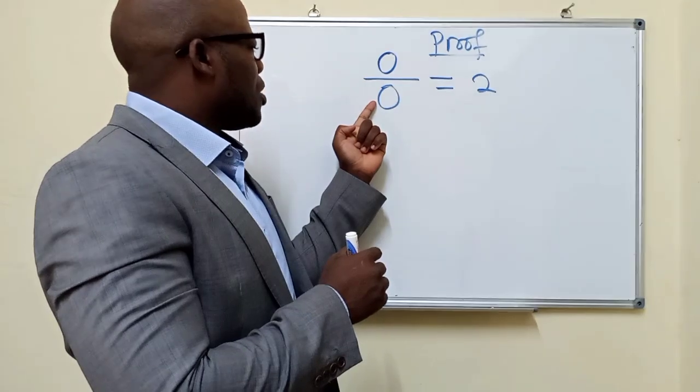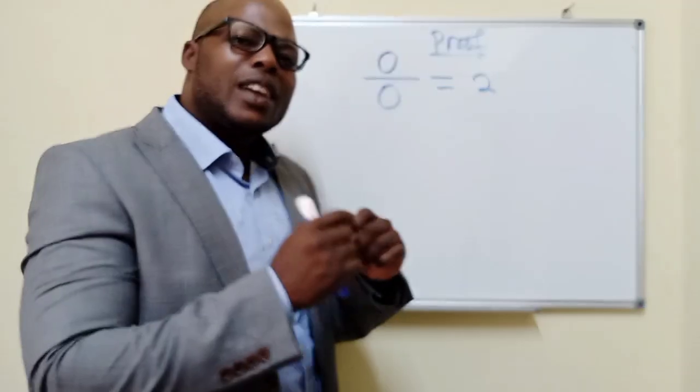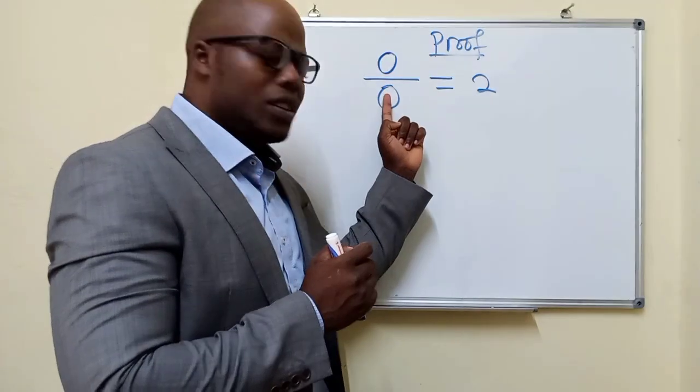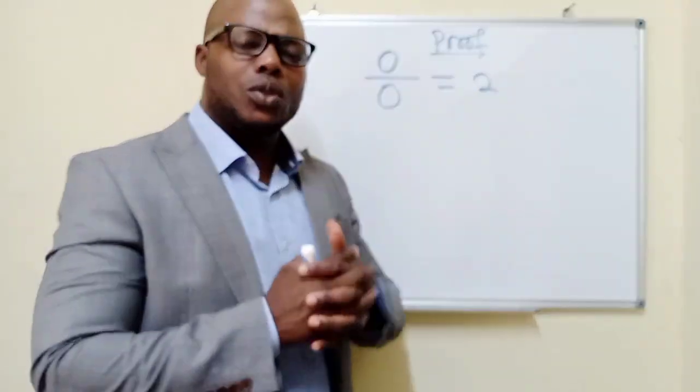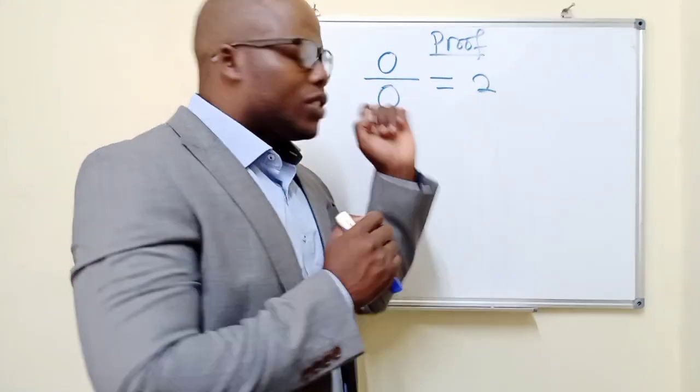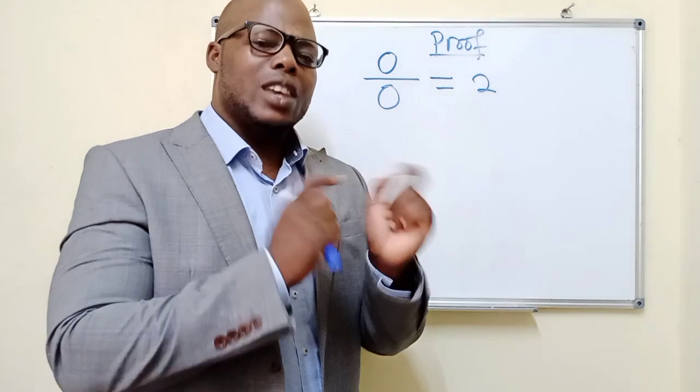In mathematics, when you have a 0 as a denominator, it's undefined. But look at this: 0 divided by 0 is equal to 2. We have to prove it. So don't say it's not there in mathematics. It's there.